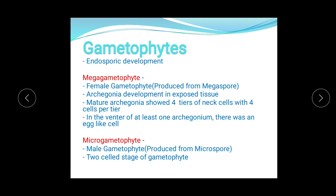In the venter of at least one archegonium, an egg-like cell is present. The microgametophyte is the male gametophyte produced from the microspore. It shows a two-celled stage of the gametophyte — researchers and investigators have observed this two-celled stage of the microgametophyte. So the gametophytes were of two types — micro and mega gametophyte — and the overall development of the gametophyte is of endosporic type.